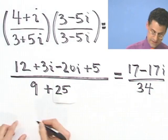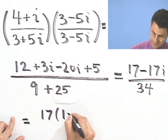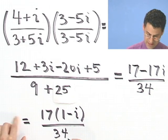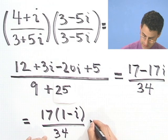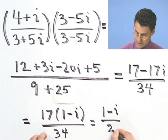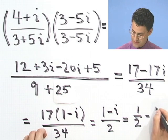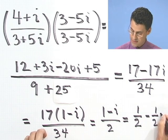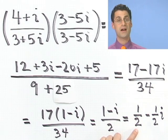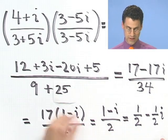And I can factor a 17 out of the top. And I'm left with 1 minus i divided by 34. And look, I can cancel the 17 and the 34. And that leaves me with 1 minus i over 2, which I could write this way. Some people like to write these things this way. Because then you can see the real part is 1 half, and the imaginary part is minus 1 half. So you could break up that fraction and write it that way.